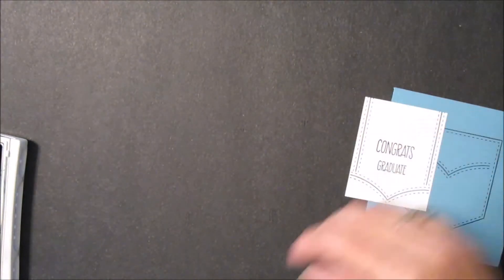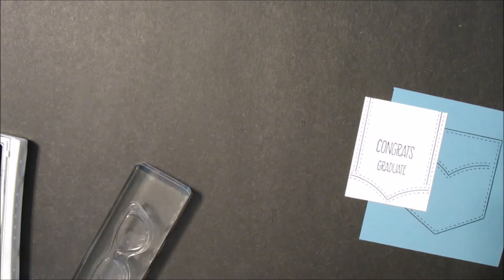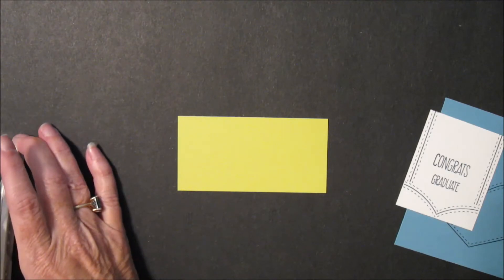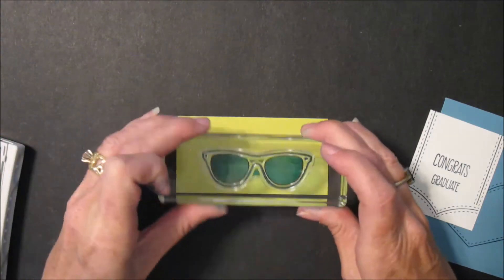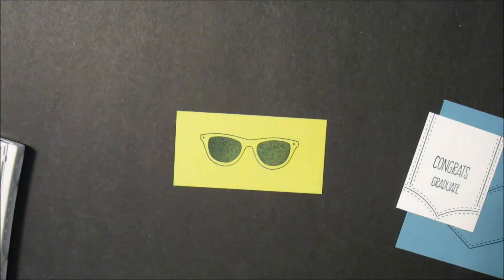And then our last piece of stamping is the sunglasses, and that is going to go onto this Lemon Lime Twist piece, just like that.